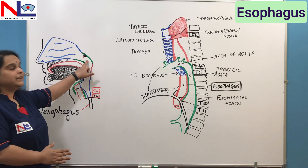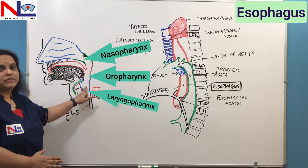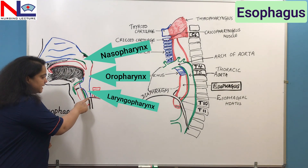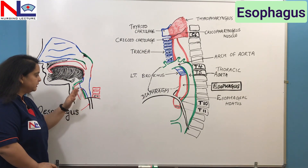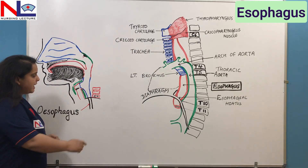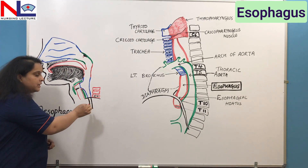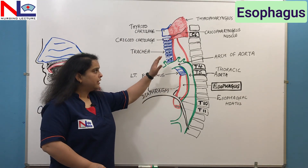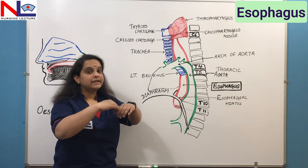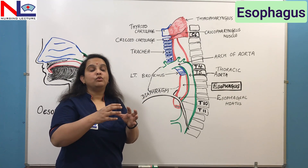The pharynx has three parts: the nasopharynx, oropharynx, and the laryngopharynx. The esophagus extends from the lower part of the laryngopharynx — the landmark being the lower part of the cricoid cartilage, which is part of the larynx. Posteriorly it corresponds with the C6 vertebra (cervical 6). From this point it descends vertically into the thorax.